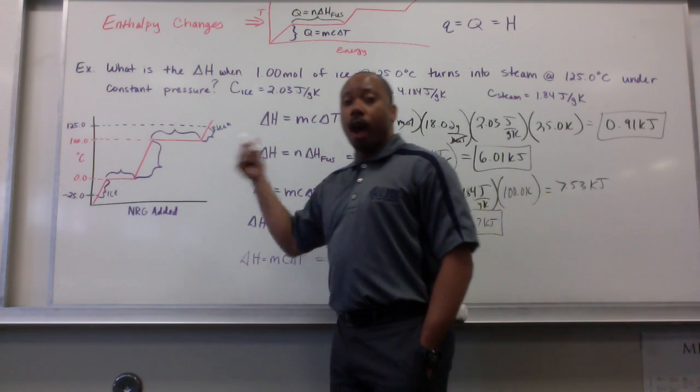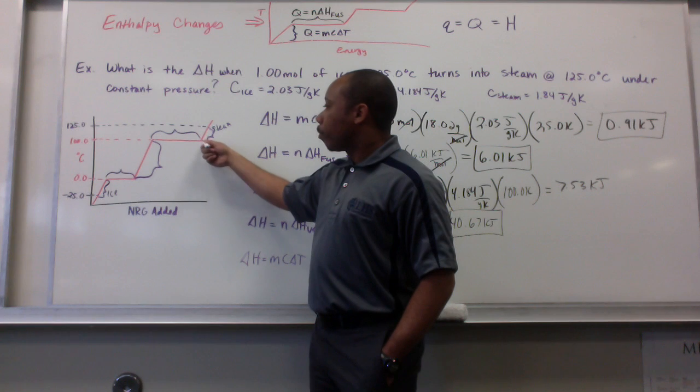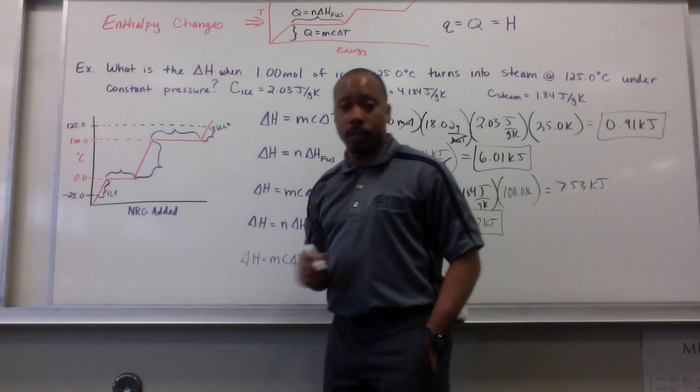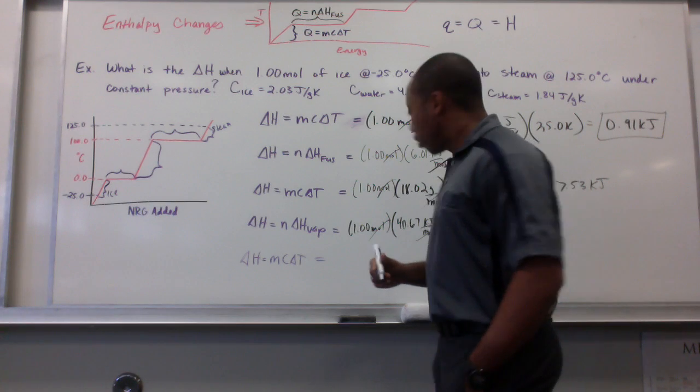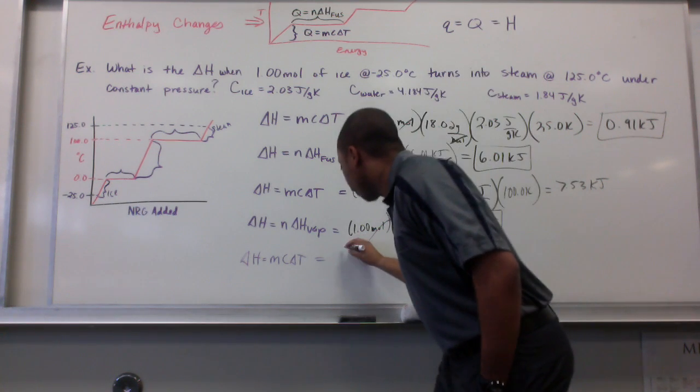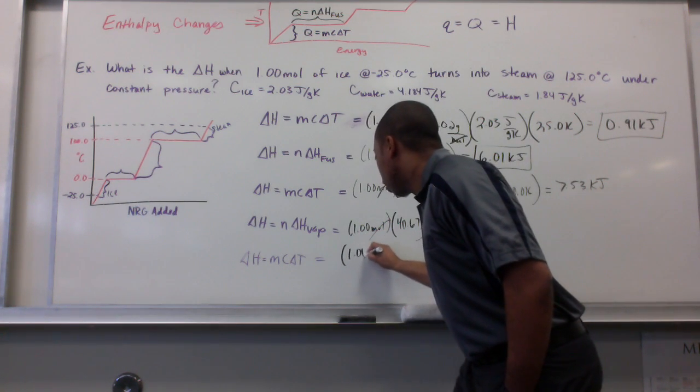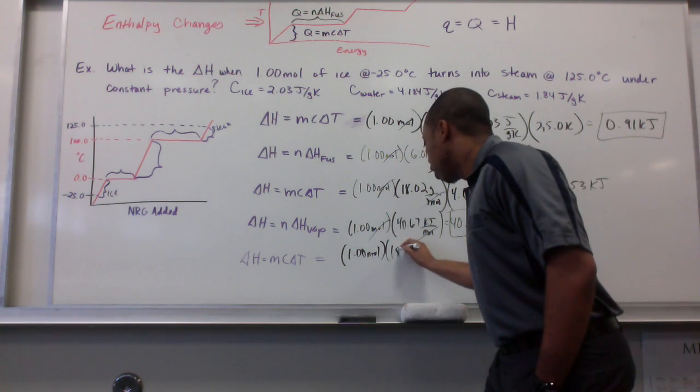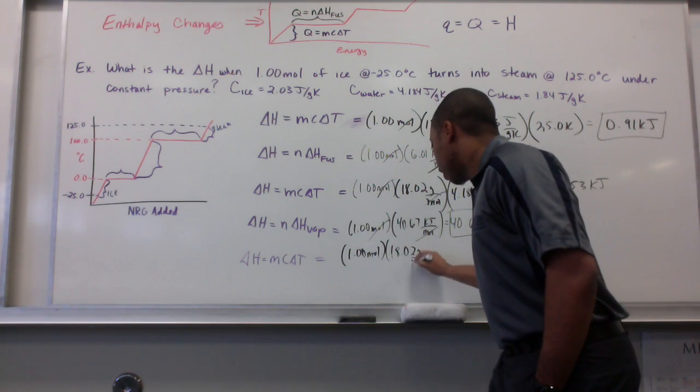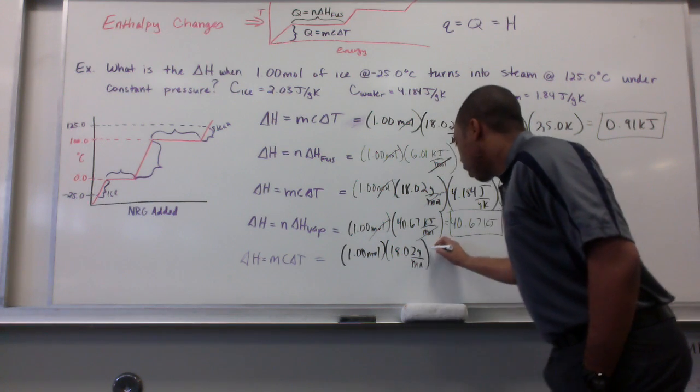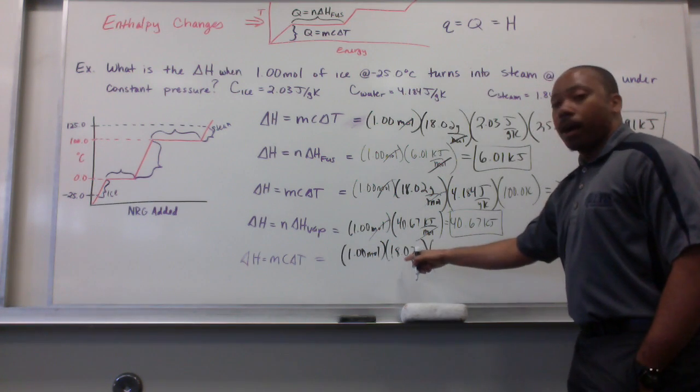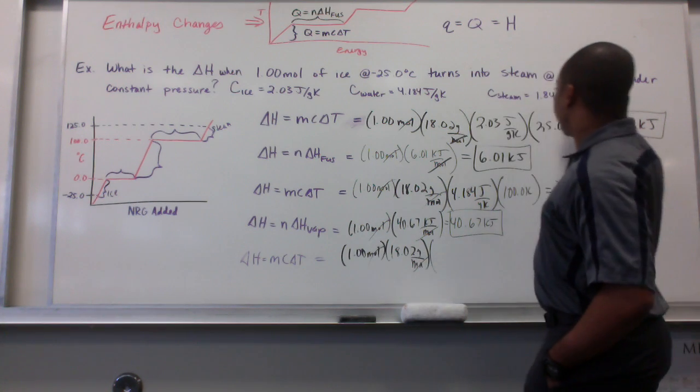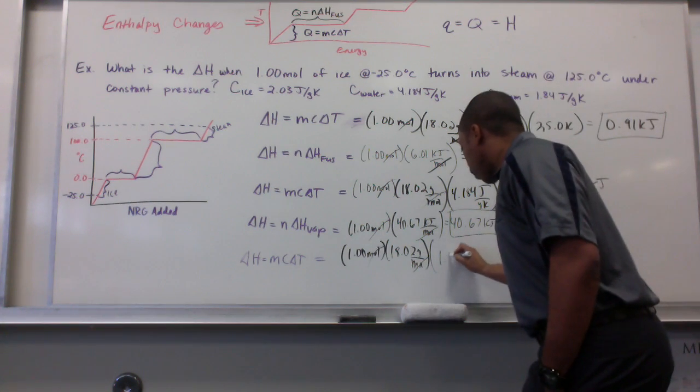And, now, we want to know, how much energy is associated with taking that 1 mole of steam from 100 degrees to 125 degrees. So, lastly, we use our MCAT equation. We're going to figure out how many grams. Now, our specific heat capacity is going to change to 1.84.